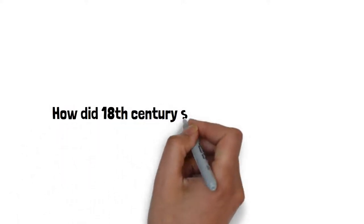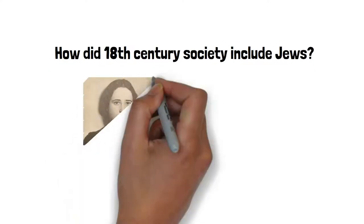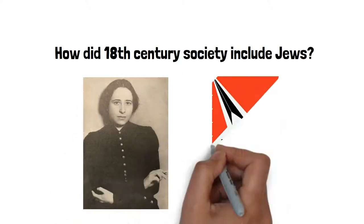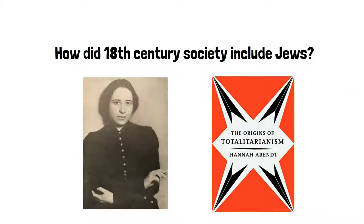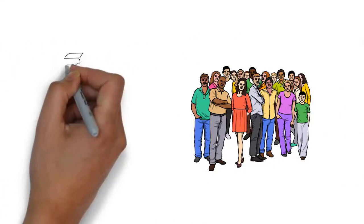How did 18th century society include Jews? Hannah Arendt gives a brief historical account of Jewish assimilation in her book The Origins of Totalitarianism. According to Arendt, it was only Jewish intellectuals who primarily sought admission into society.